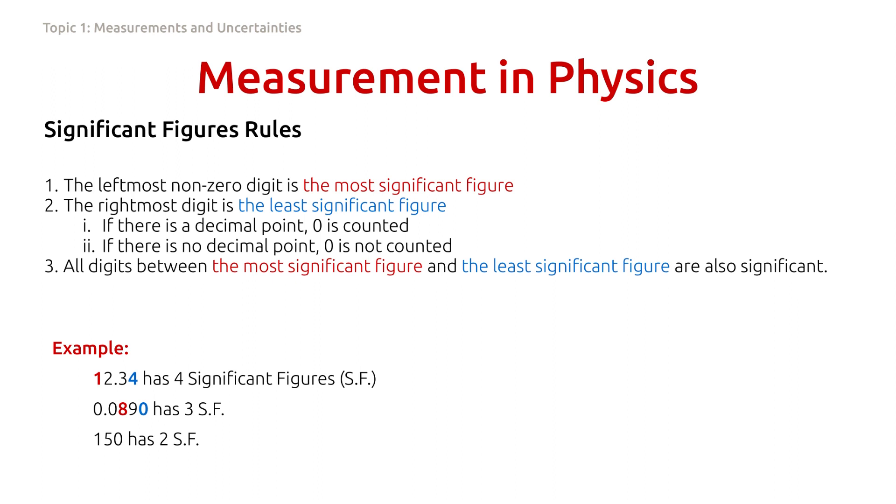As we have discussed earlier, this number has two significant figures. The most significant figure is 1, and the least significant figure is 5. The rightmost zero is not counted since there is no decimal point in this number.